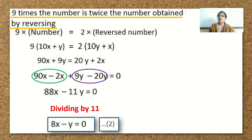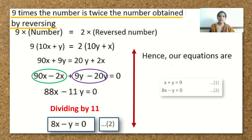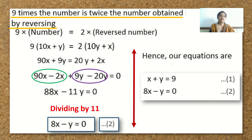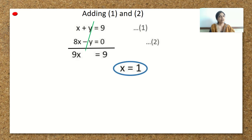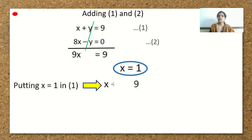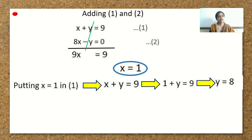Now we have got two equations. The coefficients of y are the same but their signs are opposite. When the signs are opposite, we add the equations. Adding equation 1 and equation 2, there is no need to change the signs. The y terms cancel, and we are left with 9x is equal to 9, so x is equal to 1. Putting x equal to 1 in equation 1: 1 plus y equals 9, giving y equal to 8.